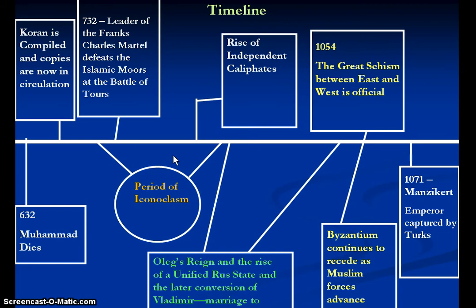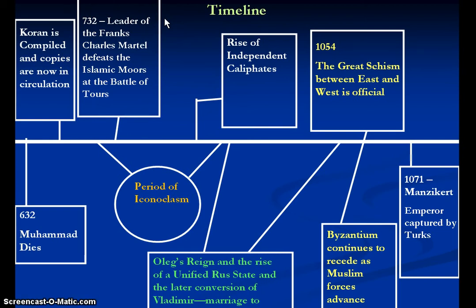Leo III had spent time in Asia Minor and had been in contact with Islam. In the Islamic faith, you are never to show or depict the Prophet Muhammad — that is considered against the religion. You see a similar idea in iconoclasm, where you do not depict saints or Jesus or Mary. As Islam makes its rapid expansion across North Africa, you have the leader of the Franks, Charles Martel, who defeats the Islamic Moors at the Battle of Tours. Tours is in France, and Islam had spread across North Africa and into modern-day Spain. It is really the Franks who are able to halt the spread of these Islamic empires. If Charles Martel had been unsuccessful, we may be seeing a different dominant religion in Europe today.